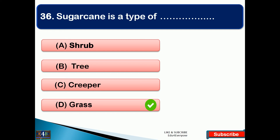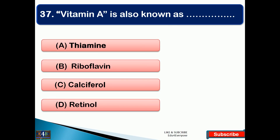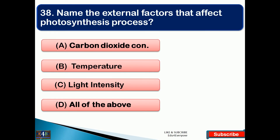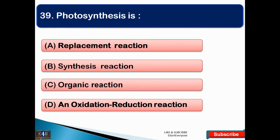Vitamin A is also known as — option D is the right answer, that is retinol. Name the external factors that affect the photosynthesis process — the right answer is option D, that is all of the above: carbon dioxide, temperature, and light intensity. Photosynthesis is — option D, that is an oxidation and reduction reaction.